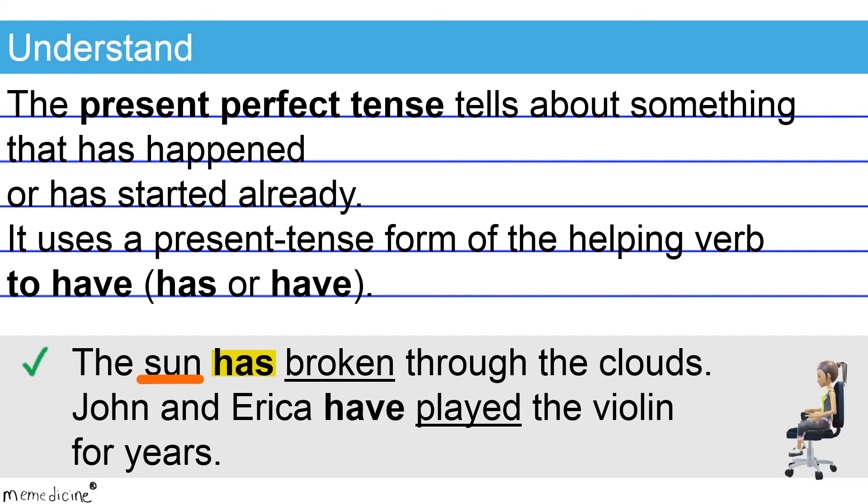Now check out another example. John and Erica have played the violin for years. Note here that have is the present tense form of the verb to have that is paired again with I, you, we, and all plural subjects. Here, our plural subject is John and Erica. So the present perfect tense have played correctly corresponds to its plural subject, John and Erica.